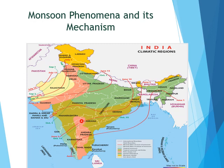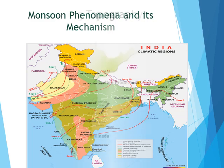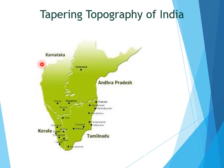Monsoons are divided into two wind systems: the summer monsoon and the winter monsoon. India's tapering peninsular topography, surrounded on three sides by water, plays an important role in determining the course of monsoon winds, resulting in a unique climate of India.